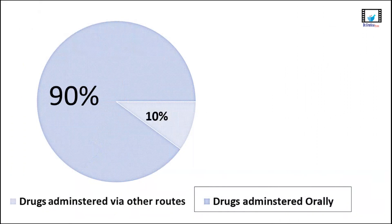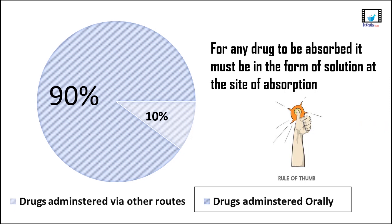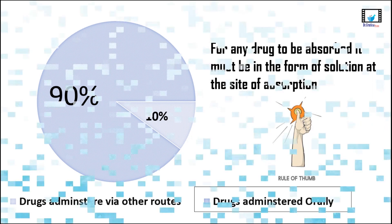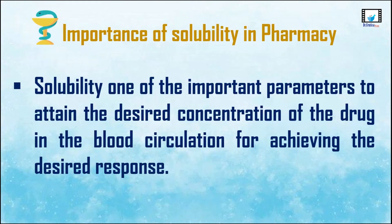About 90 percent of drugs we take are administered orally. Those drugs have to pass from the GIT and be absorbed into the blood circulation, through which they reach the site of action. It is a rule of thumb that for any drug to be absorbed, it must be in the form of a solution at the site of absorption. This makes solubility one of the important parameters to attain the desired concentration of the drug in the blood circulation for achieving the desired response — and that applies not only to oral dosage forms but nearly to all dosage forms.